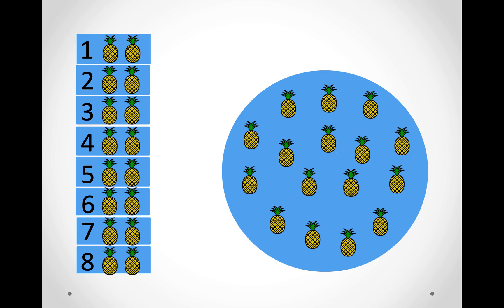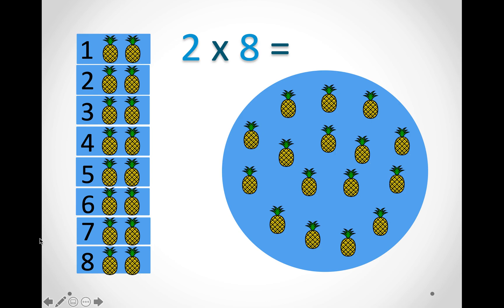In this picture we have eight groups and in each group there are two pineapples. So we can say two times eight and count in twos. If you are having trouble counting in twos, you can always say the first number softly and the second number loud: one, two, four, six, eight, ten, twelve, fourteen, sixteen. That way you will get the hang of counting in twos. So two times eight equals sixteen.